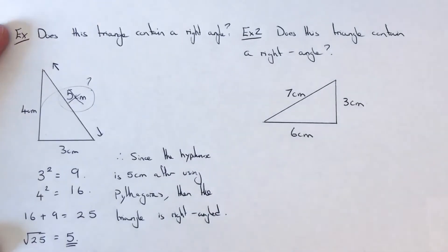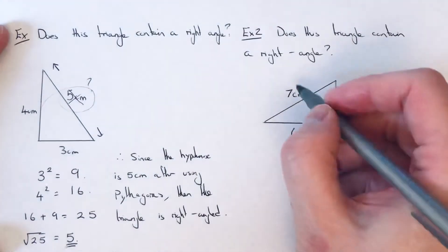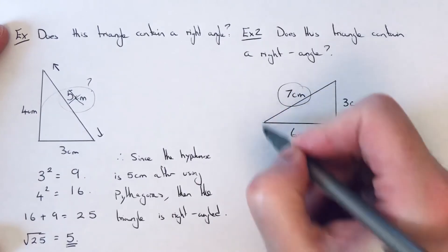Let's have a look at one more example then. Our second example, we've got a triangle which is 3, 6, and 7. So again, is this triangle right angled?